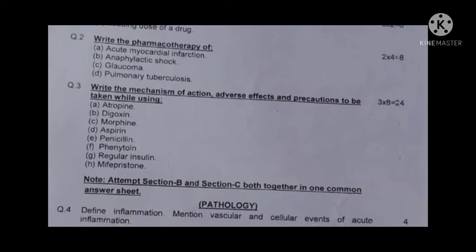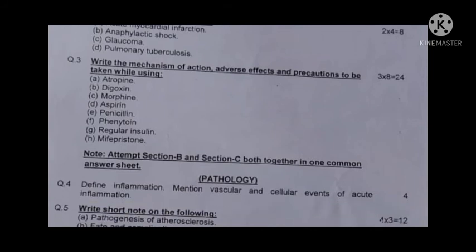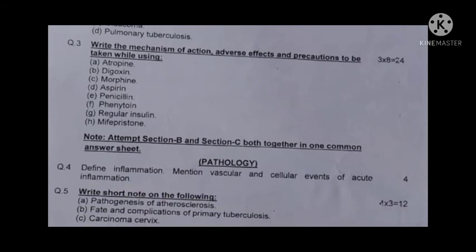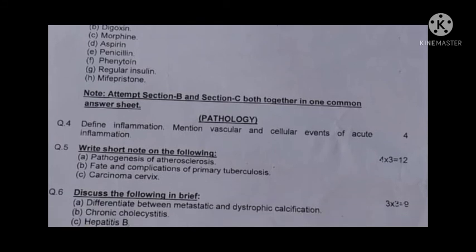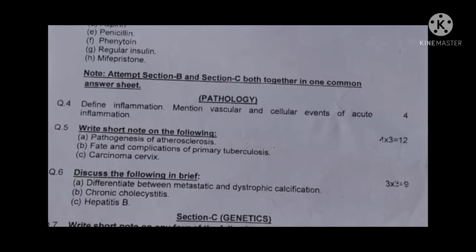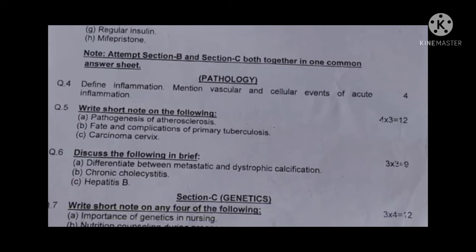Third question continued: (g) regular insulin, (h) mifepristone. Second part is the pathology section. Question four: define inflammation and mention vascular and cellular events of acute inflammation.